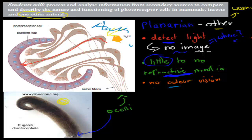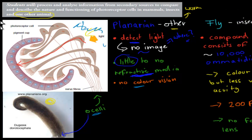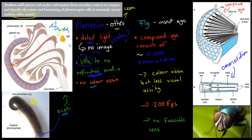So these are some examples of the ocelli, which is the eye of a planarian. And these are some of the features: they can detect light but see no image, they have little to no refractive media so they can't really bend light and focus on one spot, and they've got no color vision. Alright, so that's the worm eye. The other one we have to compare is the insect eye — I've chosen the fly eye.